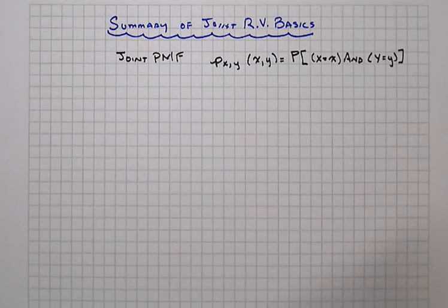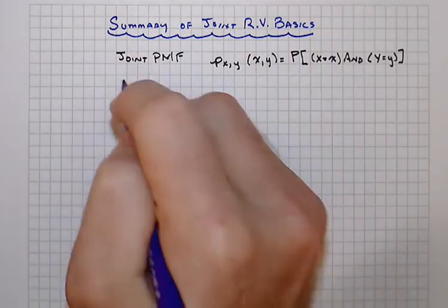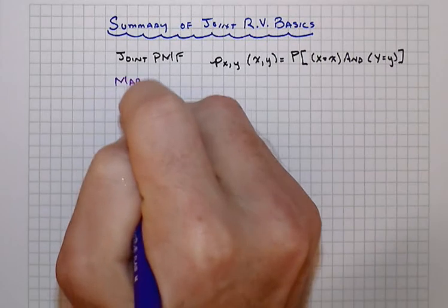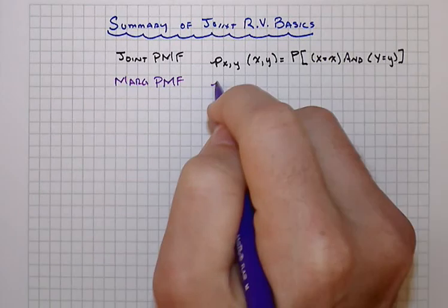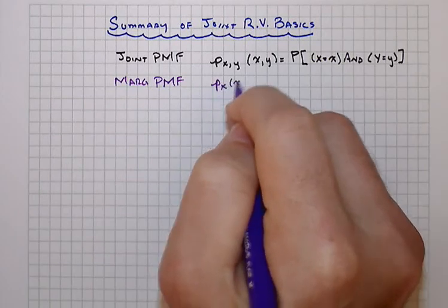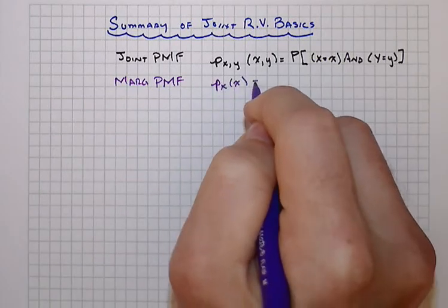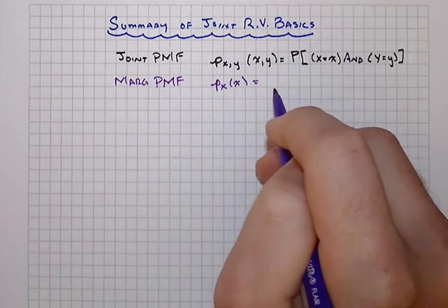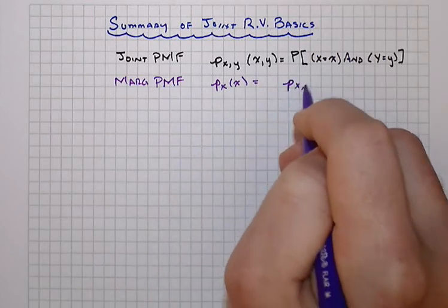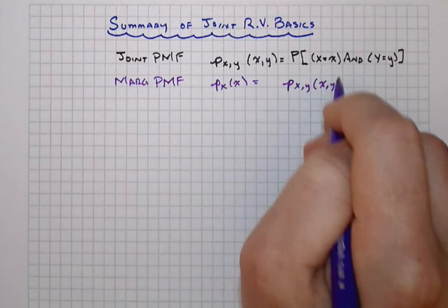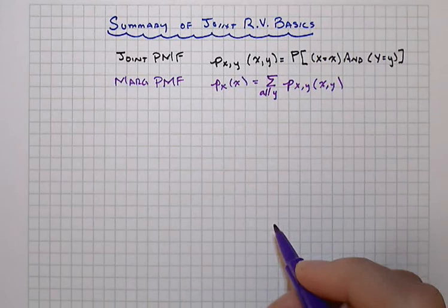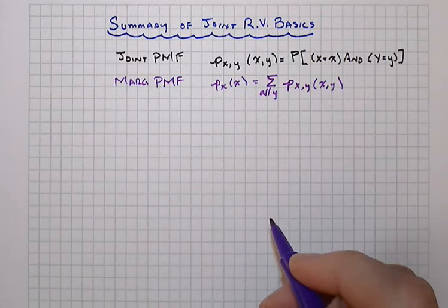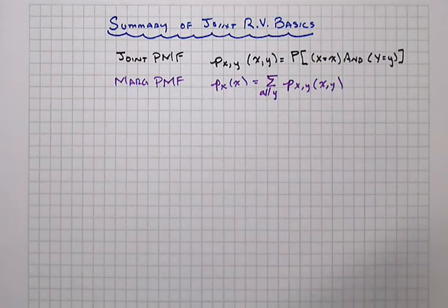And then we talked about what that would look like from the marginal function view. Say the marginal of x was what we were interested in. We can obtain that from the joint by summing over all of the y to get probability mass associated with a specific value of x.